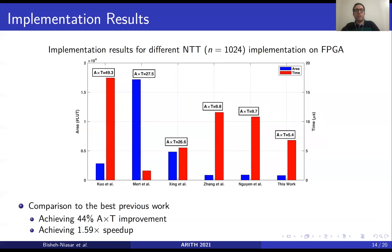Using this efficient reduction algorithm, here are the implementation results for the NTT with 1024 points. Different optimization perspectives can be used for implementing the NTT. For example, Mert et al. used a real high-performance architecture at the cost of using a lot of resources. However, our efficient architecture achieves a 44% improvement in area-time product compared to the best previous work, while also being faster.